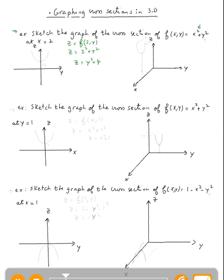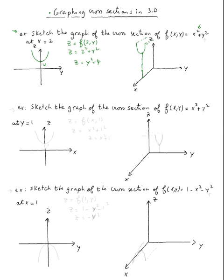So how do we graph that? This is just a parabola shifted 4 units up, so the vertex is at 4. In 3D, the cross section will be at x = 2 — we need to go to x = 2, go 4 units up, and then draw our parabola. That would be the cross section — the graph of the cross section at x = 2.